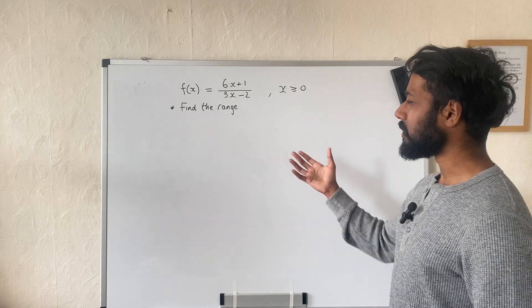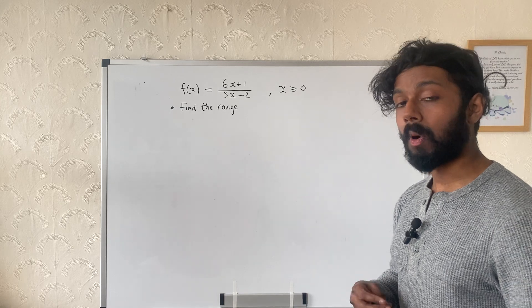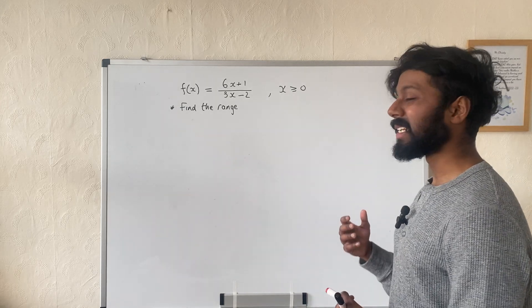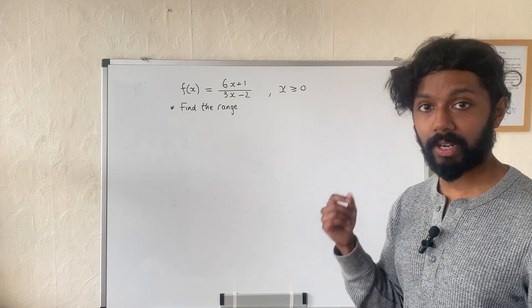At the moment, the way the function looks makes it very difficult to work out the range. So what I'm going to do here is rewrite it in a different manner. And to do that, I'm going to first use algebraic long division.